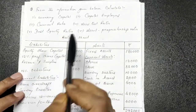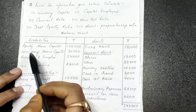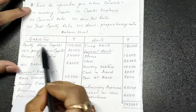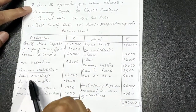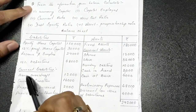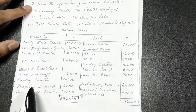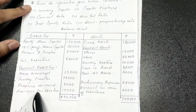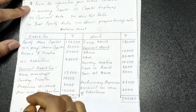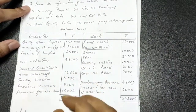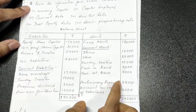One balance sheet is given to us showing liabilities, amount, assets, and amount. On the liabilities side: equity share capital, preferential capital, reserve and surplus, debentures, and current liabilities including overdraft, sundry creditors, proposed dividend, and provision for tax. On the assets side: fixed assets, and under current assets - stores, stock, debtors, cash in hand, cash at bank, preliminary expenses, and discount on issue of shares.